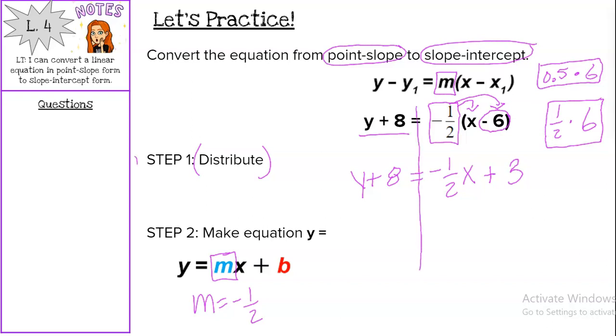So we did step 1. And now step 2, we have make the equation y equals. So we have that y plus 8, so we're going to undo that plus 8 with a minus 8. We do it on the left-hand side, we have to do it on the right-hand side.